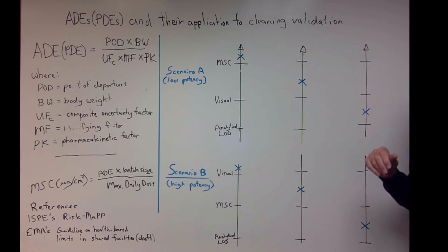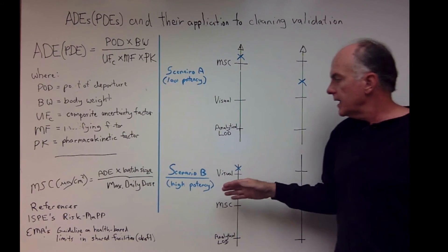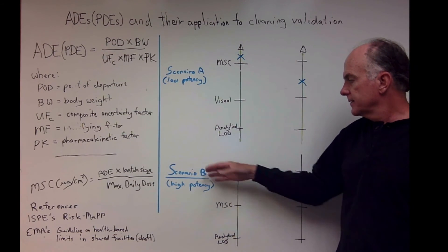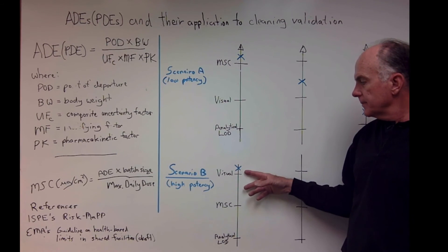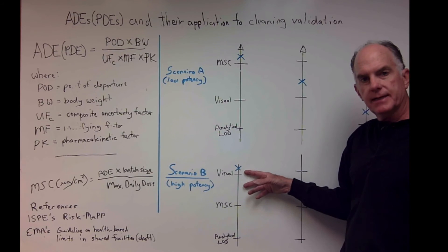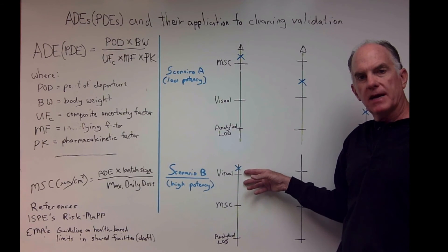Now let's go to a high potency compound, this is scenario B. In this scenario you can see that your visual limit, or your visual acuity—I don't like calling it a limit—your visual acuity abilities, which are typically one to four micrograms per 100 cm squared.